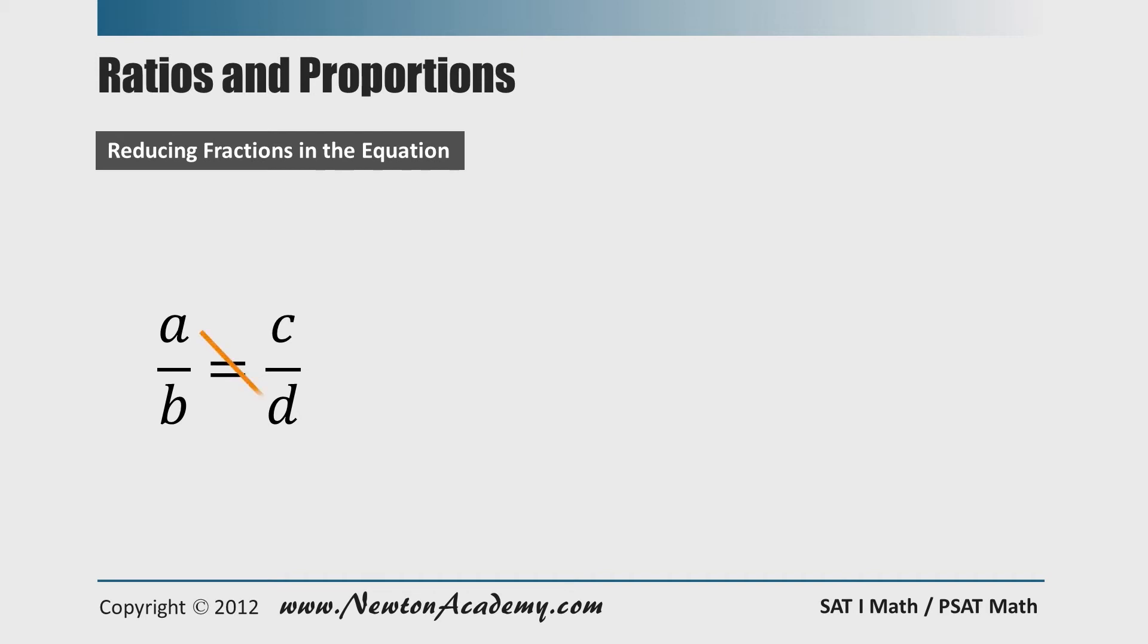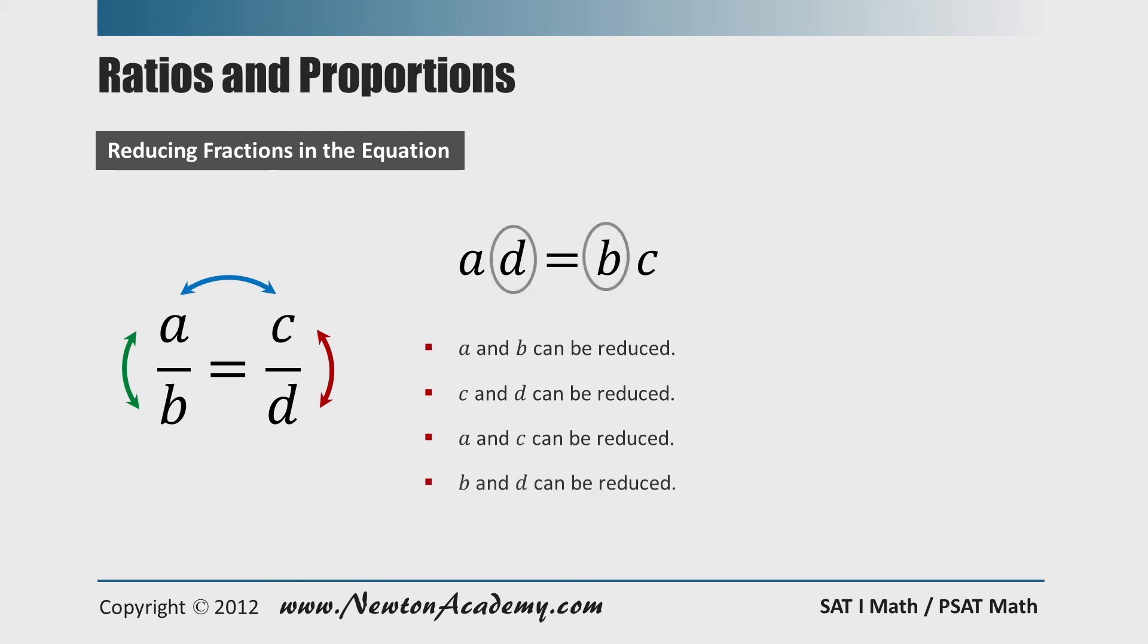So to explain that, let's cross multiply. Then we have AD equals BC, and this way we can clearly see how they are reduced, because if you can reduce in certain way in one expression, you must be able to do the same thing in the other equivalent expression. It is very obvious that A and B can be reduced in both expressions, and C and D can be reduced in both expressions. Now, with this AD equals BC equation, it's clear that A and C can be reduced, but look at this fraction form. Since they are equivalent expressions, we must be able to reduce A and C here. With this AD equals BC equation, it's clear that B and D can be reduced, but look at this fraction form. Since they are equivalent expressions, we must be able to reduce B and D here also.